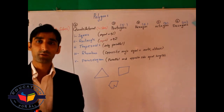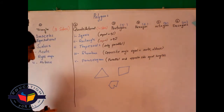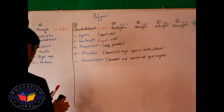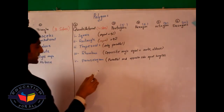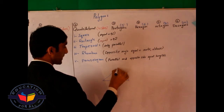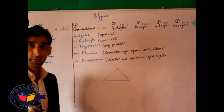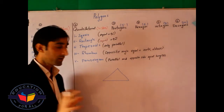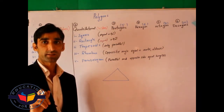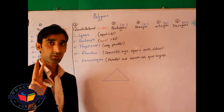Now we are going on to the types of triangles and why a triangle has six types. A triangle has six unknowns — three sides and three angles. So a triangle has six types: three types according to the angles, and three types according to the sides.